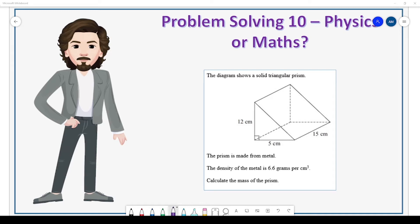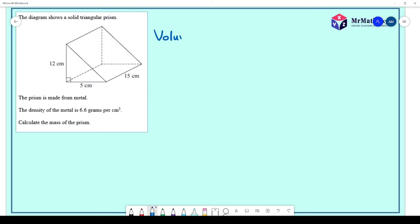Problem solving 10: The diagram shows a solid triangular prism. The prism is made from metal. The density of the metal is 6.6 grams per centimeter cubed. Calculate the mass of the prism.